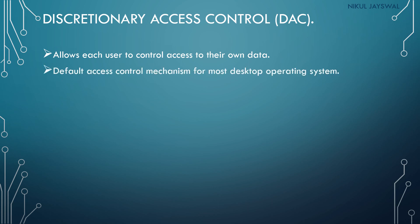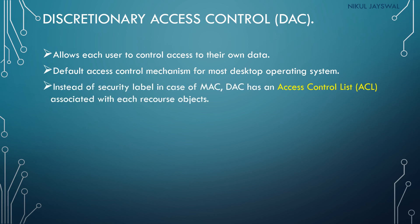Instead of security labels as in MAC, DAC has an access control list (ACL) associated with each resource object. Every file in the operating system has an access control list. The ACL contains the names of users allowed to access that file and specifies what operations they can perform — such as read, write, or modify the file.